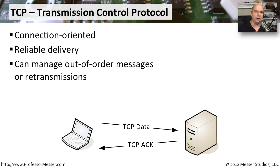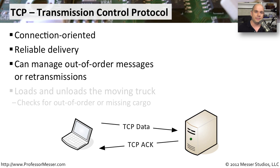Every byte is numbered in these TCP communications, so it simply figures out the correct order based on the byte numbers received. This also takes retransmission into account — if duplicates are received, TCP will get rid of any extras.